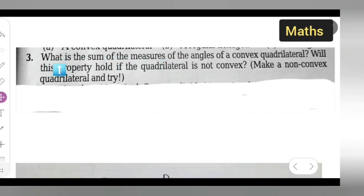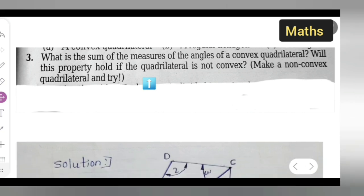We have question number 3. You can take down this question first. What is the sum? Sum means we are adding the measures of the angles. We will be adding the measures of the angles of a convex quadrilateral. They are asking what will be the sum of the measures of the angles of the convex quadrilateral, and will this property hold if the quadrilateral is not convex? Make a non-convex quadrilateral and try. Let us try this.